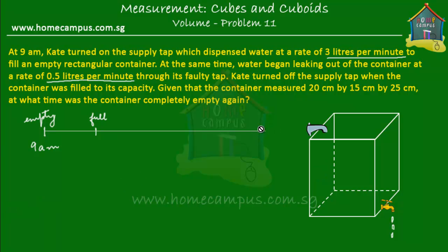We have to find out at what time the container was empty again — that is the time we are interested in finding. Now here are a few other things that we know: the container measured 20 cm by 15 cm by 25 cm. Usually these numbers are written as length, breadth, and height, but for this question we only care about the volume or the capacity of the container.